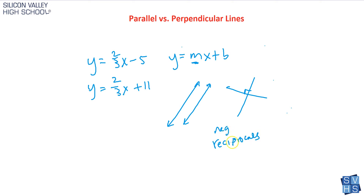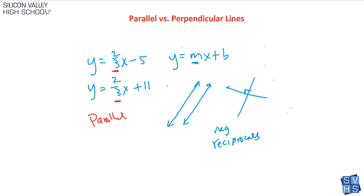Let's look at this example. For these two lines in y equals mx plus b form, the slope m of the first line is 2/3, and the slope m of the second line is also 2/3. Because these slopes are the same, we know these two lines are parallel. We didn't have to graph them — we just looked at the slope. They weren't negative reciprocals of one another; they were the same slope.